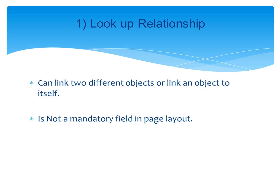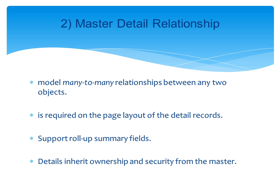Master-Detail relationship models a many-to-many relationship between any two objects by creating a junction object between those two objects. It is a mandatory field on the detail record page and supports rollup summary fields. When an object has a master-detail relationship field, it can use rollup summary fields to count child records and find the min or max of a particular field value in the child records. The detail object inherits ownership and security from the master object. For example, if Review has a master object of Job Application, it is impossible to create a review record without a related job application record.